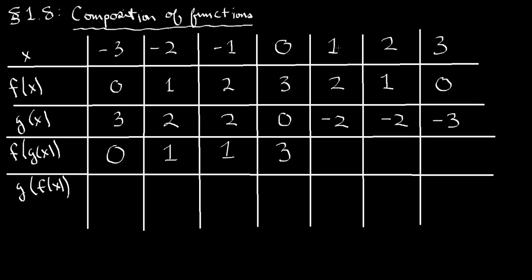We go to x equals 1, plug it into g, we get negative 2. Now we use this and plug it into f. So we go here, and we get 1. For 2, if you plug in x equals 2, g becomes negative 2. When you plug negative 2 into f, you get 1.